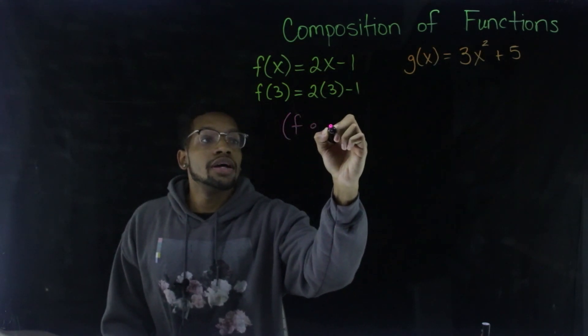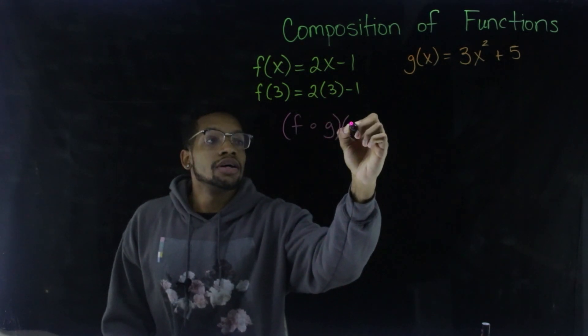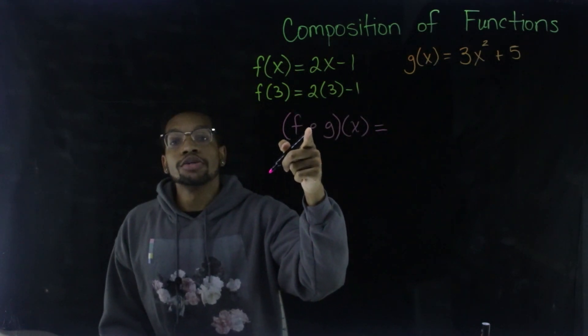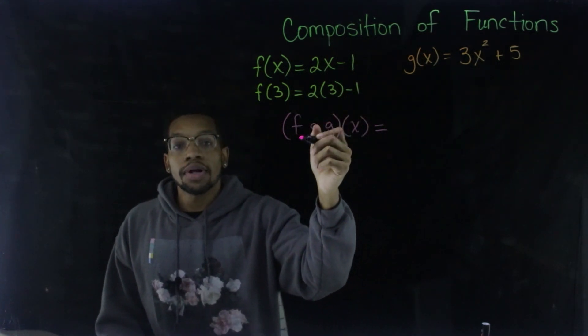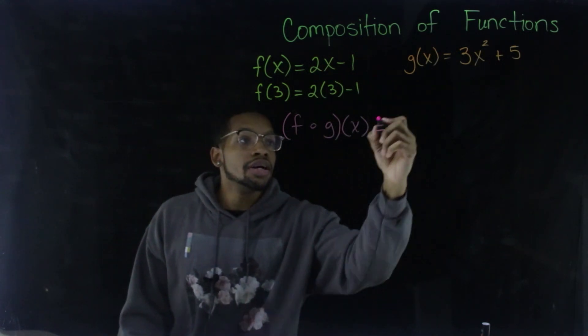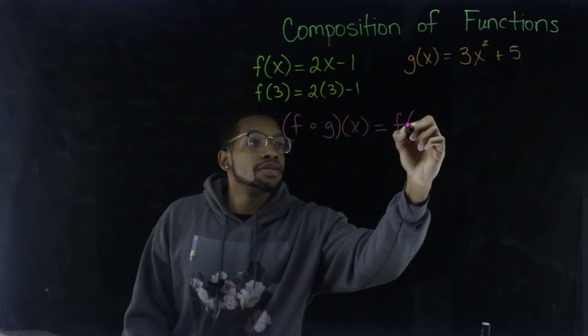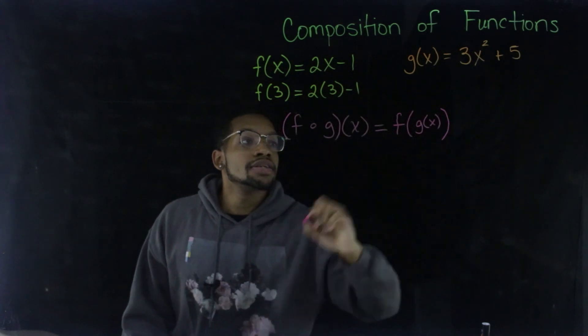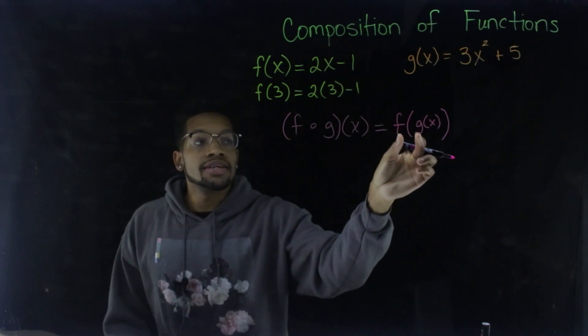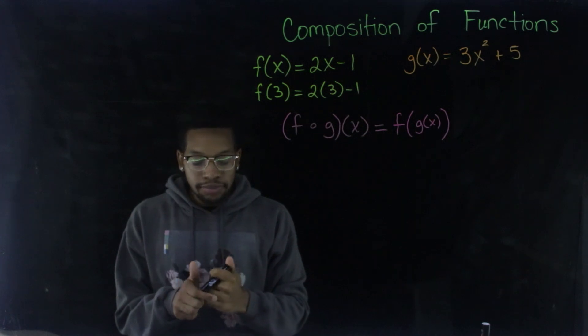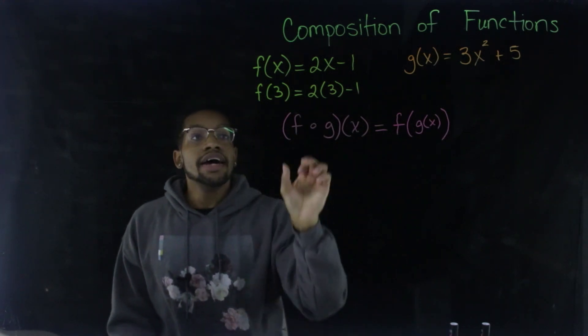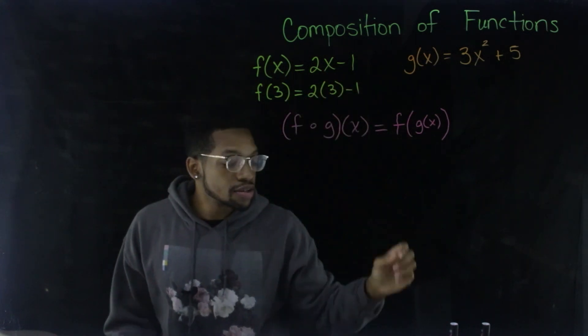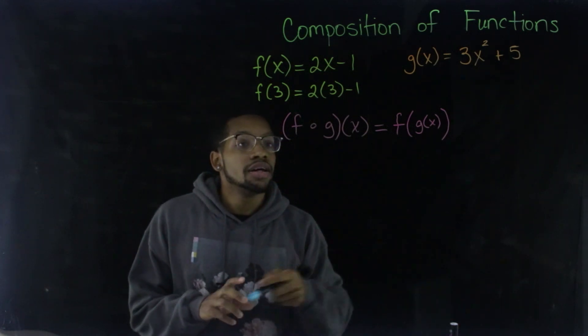You're going to use both functions. And some people like to call it the fog function because it does look like a little circle. By the way, this is not a multiplication. If it's a filled in dot, that's multiply. But this means composing F onto G. And basically the way it works is you take your function F and instead of putting a number like three in the last example, you put the whole function as F's input. So basically whatever G of X is in F of X, wherever you see an X, instead of replacing that with three, you're going to replace it with G of X as a whole function. So let's see what that looks like in practice.